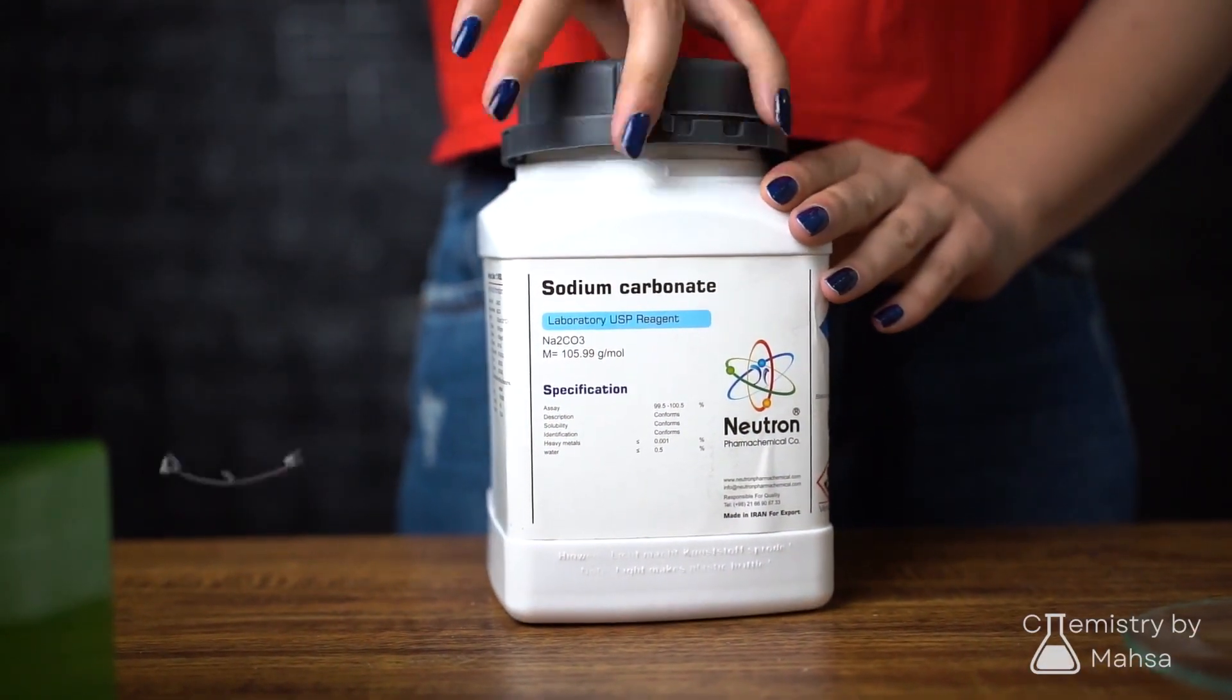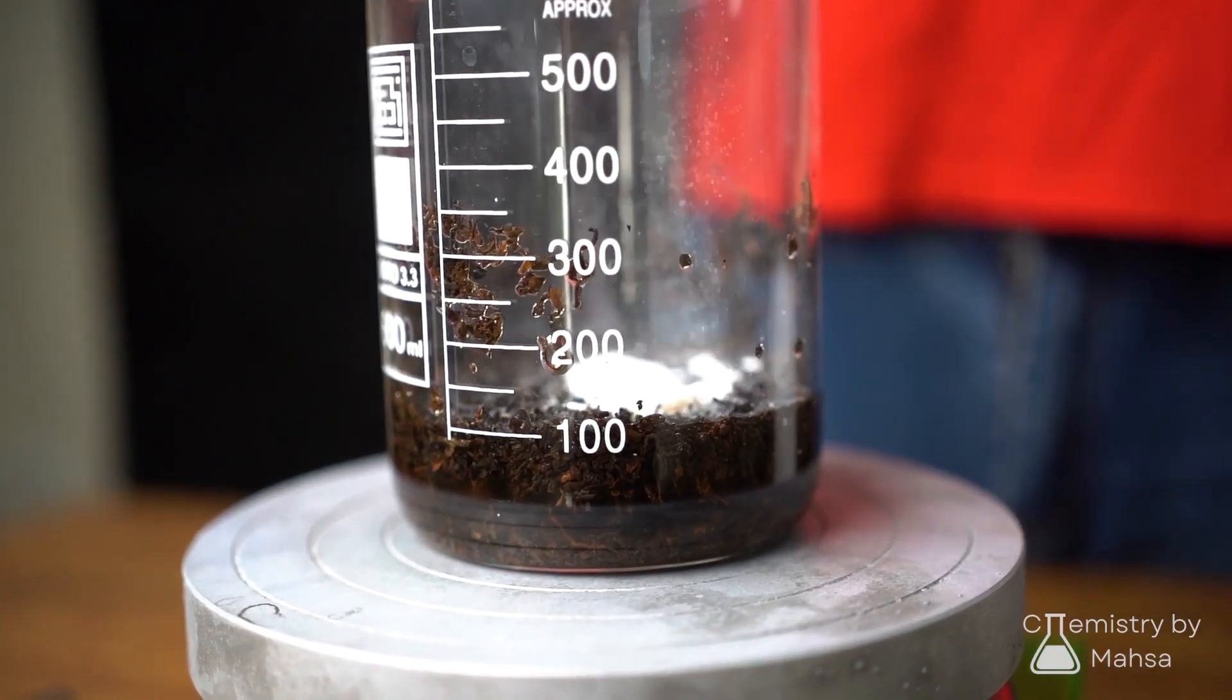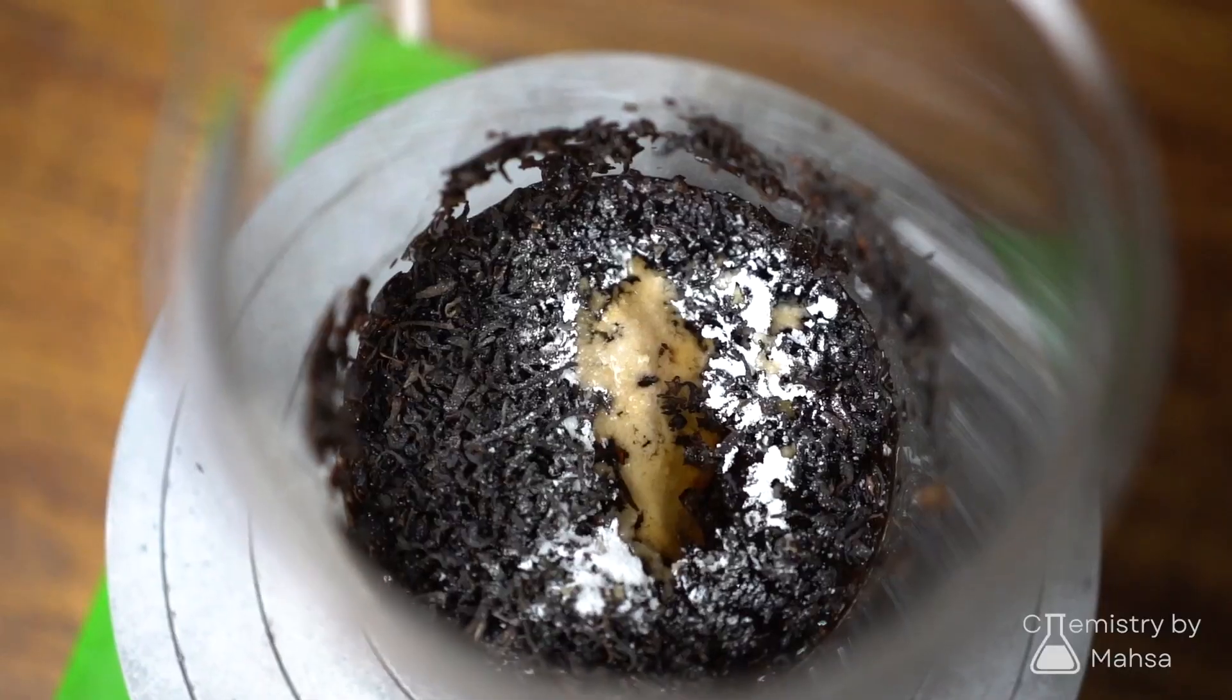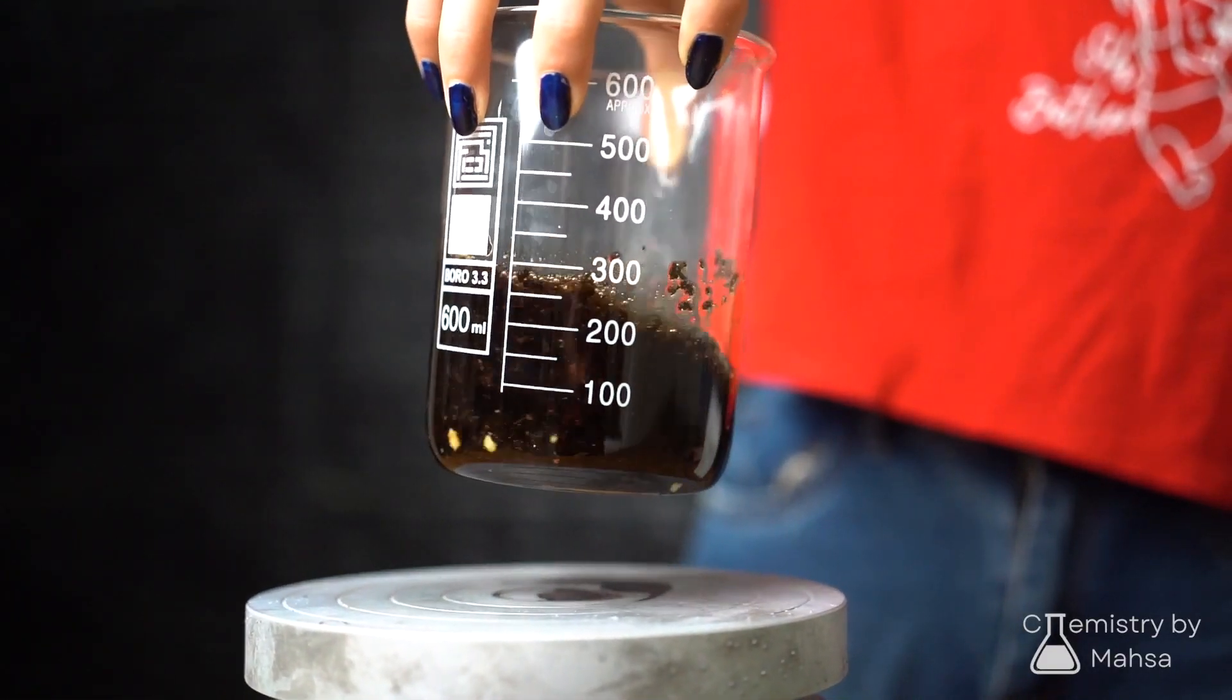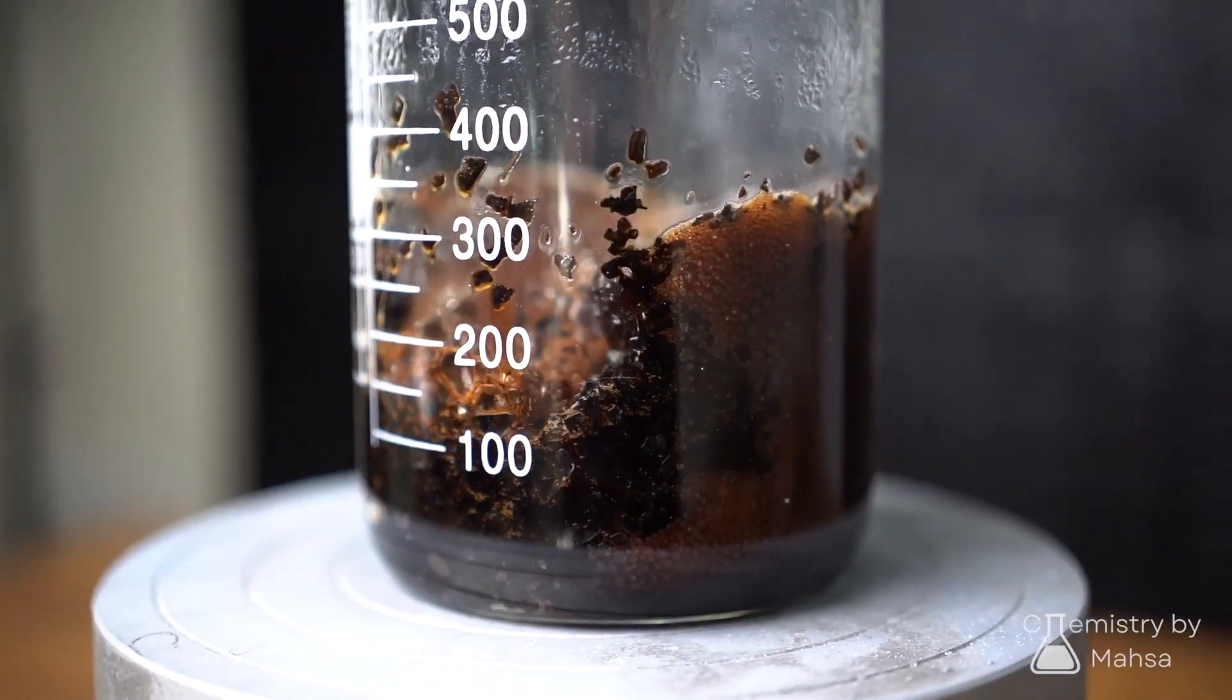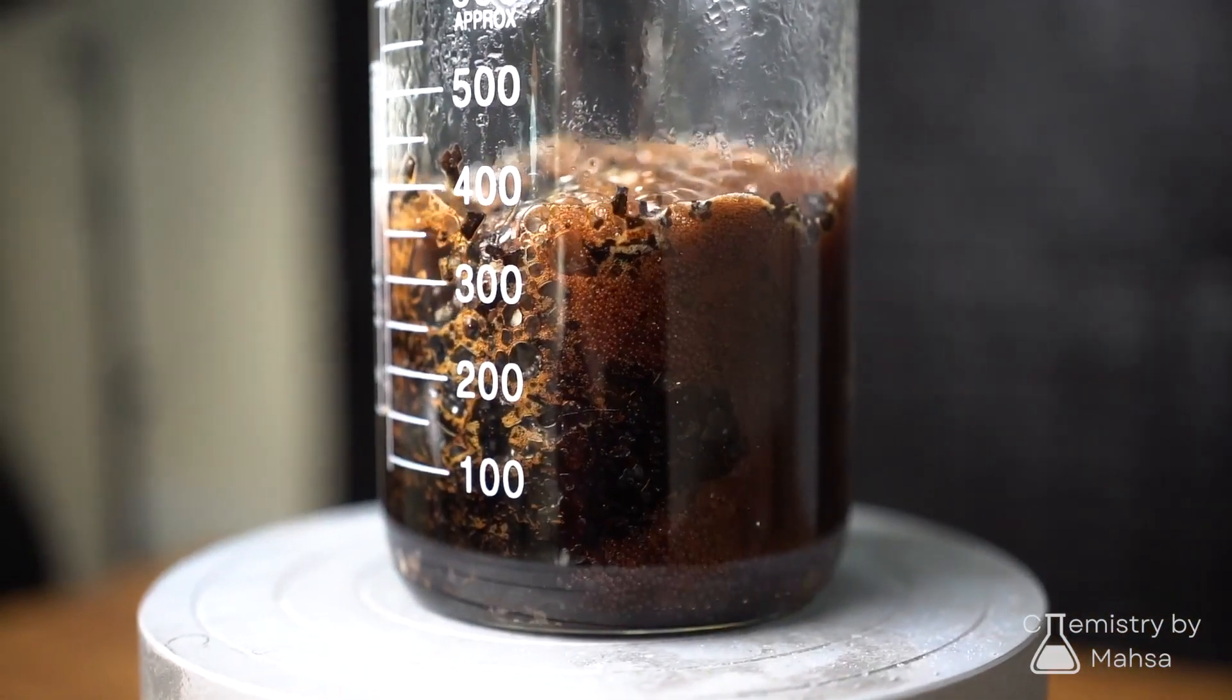Tannins are naturally occurring compounds found in tea leaves and can interfere by forming complexes with caffeine. To eliminate this, 6 grams of sodium carbonate was added. Sodium carbonate's basic nature reacts with tannins, causing them to form water-soluble complexes. Remember to cover your beaker to prevent water loss and boiling continued for about 10 minutes.